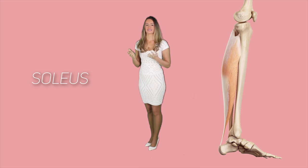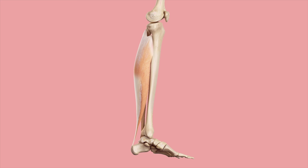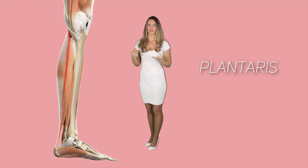Soleus is the second plantar muscle. It is a very thick, flat muscle. Its anatomical location is inferior to the gastrocnemius, but they link together forming the calf. The origin of the soleus is the tibia and fibula, attaching to the calcaneal tendon. This major plantar muscle works together with the gastrocnemius producing the plantar flexion of the foot. The third muscle of the plantar flexor group is the plantaris, which connects the heel and the femur — its contraction causes flexion of the foot and knee.